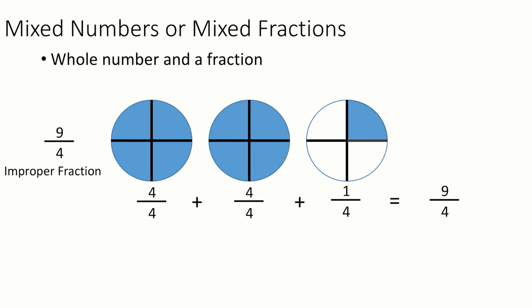The other representation that goes along with that is a mixed number. Looking at the example below, we have an improper fraction of 9 over 4. So what this looks like as a fraction is 4 over 4 plus 4 over 4 plus 1 over 4, and that's 9 over 4.